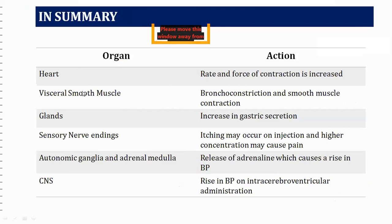In summary, the seven sites affected by histamine are: heart, visceral smooth muscles, glands, autonomic ganglia, adrenal medulla, CNS, and blood vessels. These are the pharmacological actions of histamine in the body.